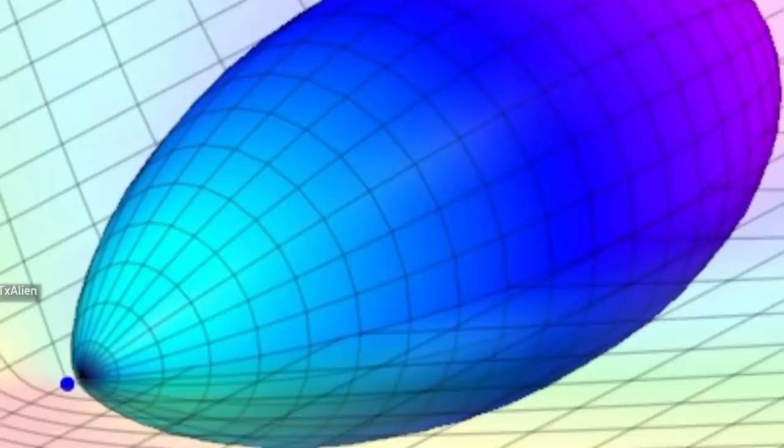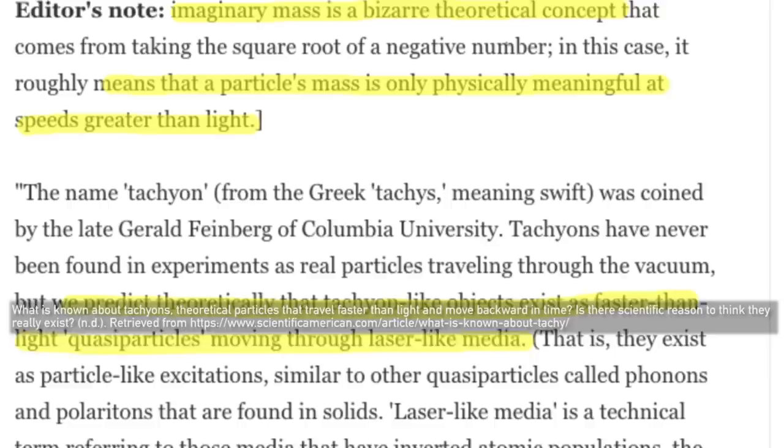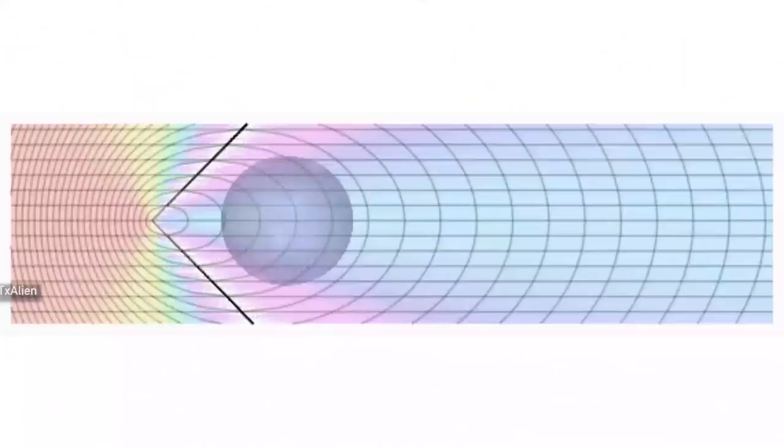The only particles which could achieve a backwards trajectory in time would be those which possess an imaginary mass, and this would have some bizarre effects upon how a tachyon behaves. For example, when a normal particle of matter loses energy, the impact of kinetic force would lessen and it would slow down. A tachyon would experience the opposite effect, speeding up as it lost energy,